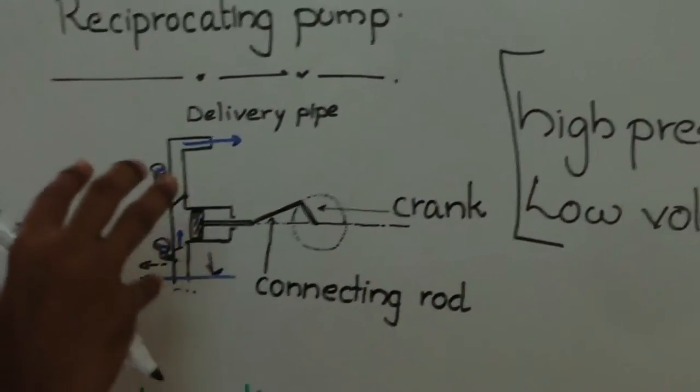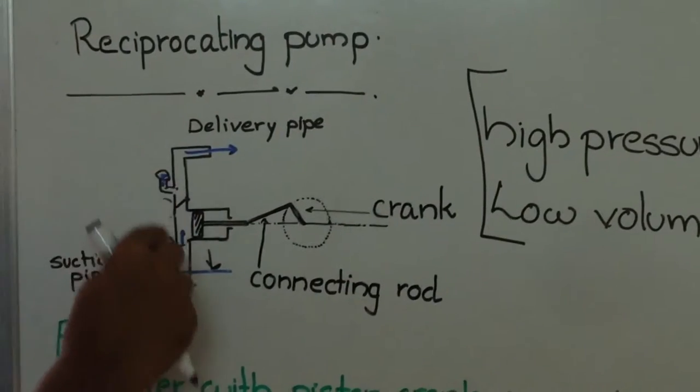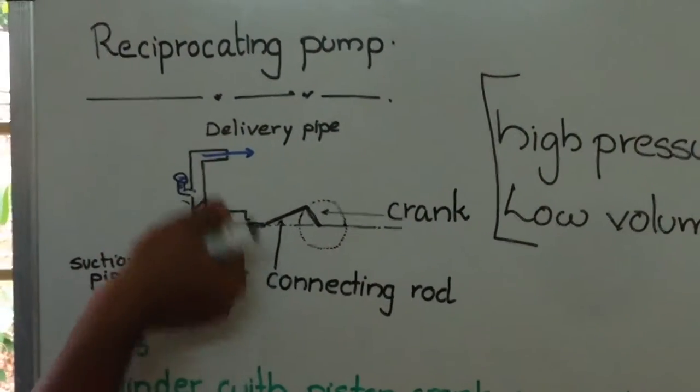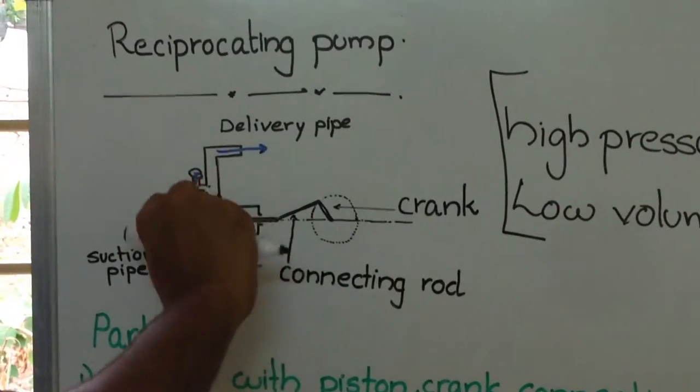In order to obtain almost constant discharge, we use two air vessels—one just above and one just below the one-way valves.